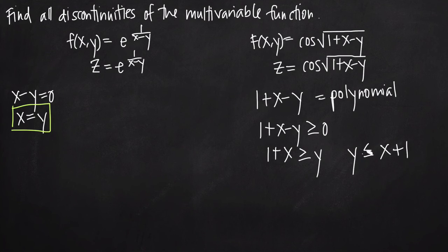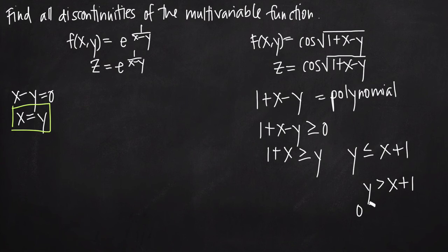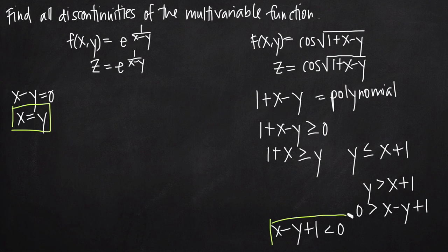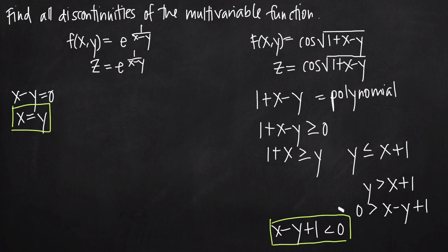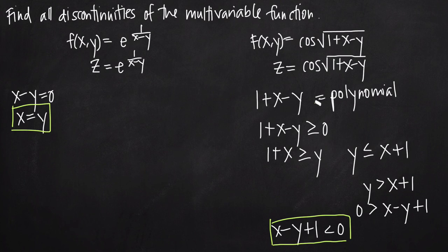In either case, this is the only restriction. When y is greater than x plus 1, or equivalently when x minus y plus 1 is less than zero, our function is discontinuous because we would have a negative value underneath the square root sign. That expression is exactly what we have under the radical, and we don't want it to be less than zero. So you're just looking for points in the function where a piece of the function is undefined — and that's how you find discontinuities of a multivariable function.